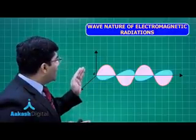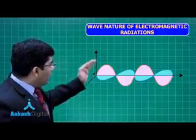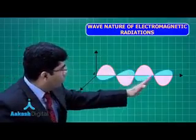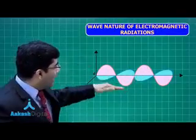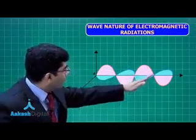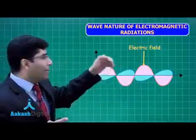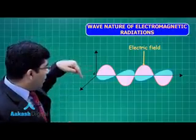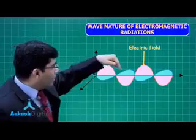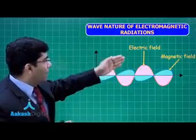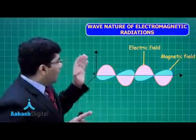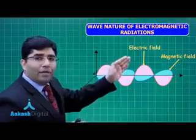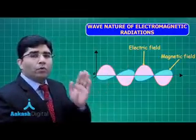In electromagnetic radiations, one wave is going perpendicular to the axis in the vertical direction — this is the electric field, and you can say it is the electric wave. There is one more wave moving horizontally, and that wave is the magnetic field. This means that electromagnetic radiations are composed of an electric field as well as a magnetic field, and both are perpendicular to each other.